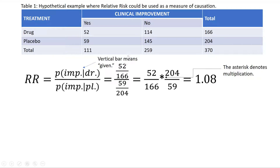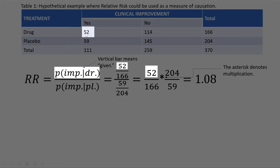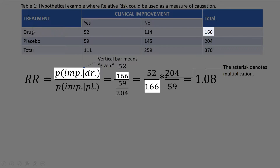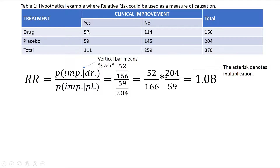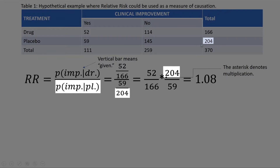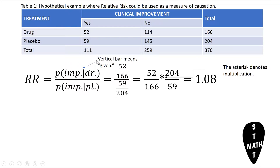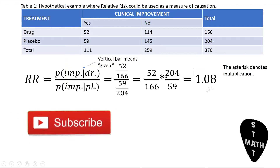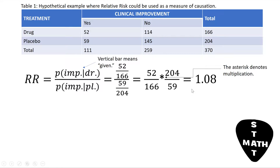So here, 52 — this is where the 52 comes from — of these 166 patients who were given the drug actually improved. And the denominator is because 59 of these 204 patients who were actually given the placebo improved. And so when you divide fractions, you invert and multiply. And if you do this on the calculator and round off, you will get 1.08 as the relative risk estimate.